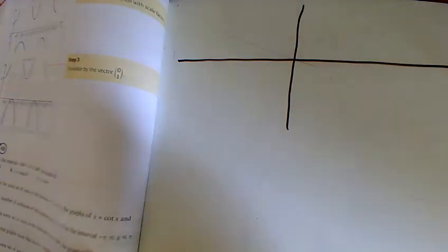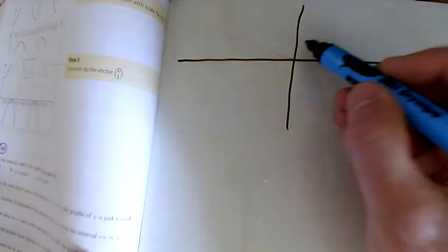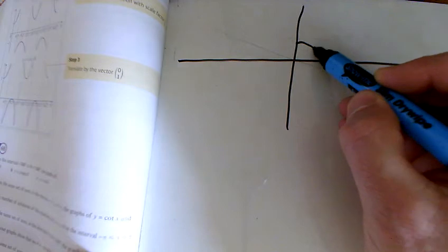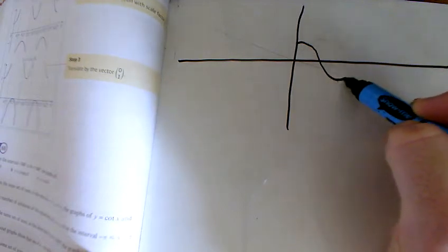Exercise 6b, the first question is asking us to do a sec graph. Well sec is 1 divided by cos, so let's draw a cos graph first of all.